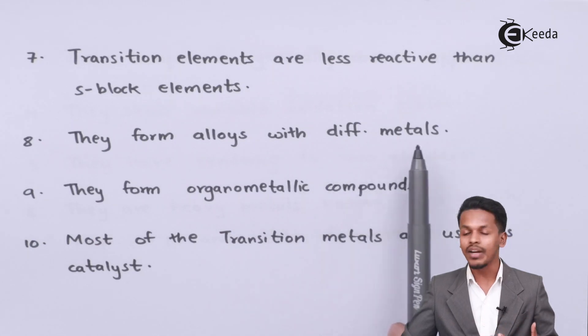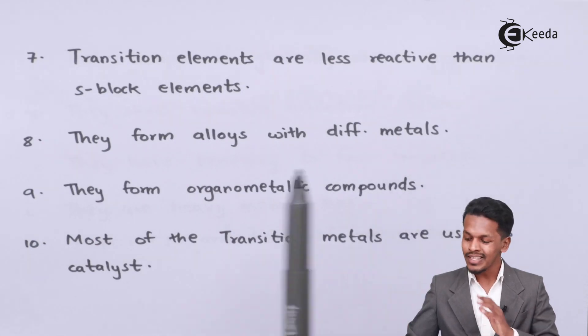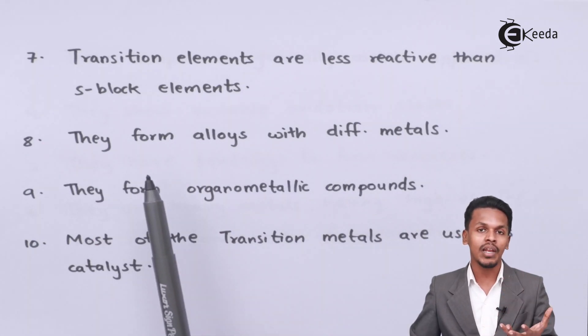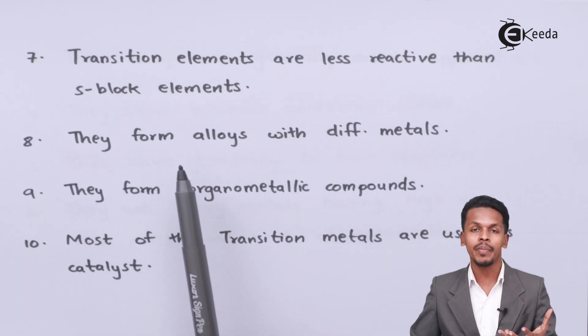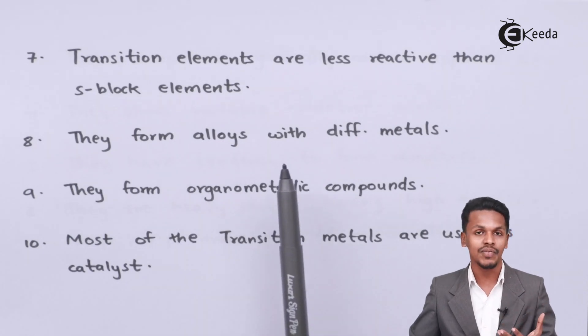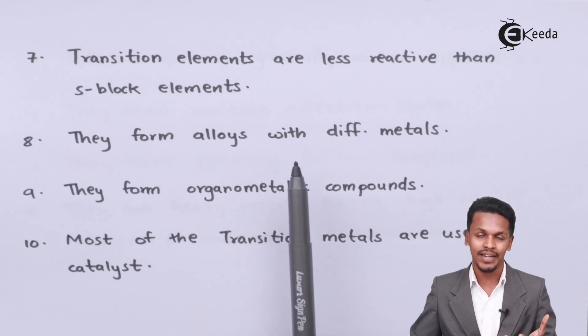They form alloys with different metals. The D-block elements, or transition metals, have the tendency to form alloys with other metals.